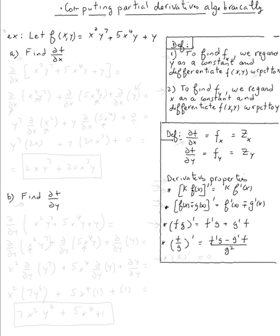The topic is computing partial derivatives algebraically. For the first example, let f(x,y) = x²y⁷ + 5x⁴y + y. We want to find the partial derivative of f with respect to x.